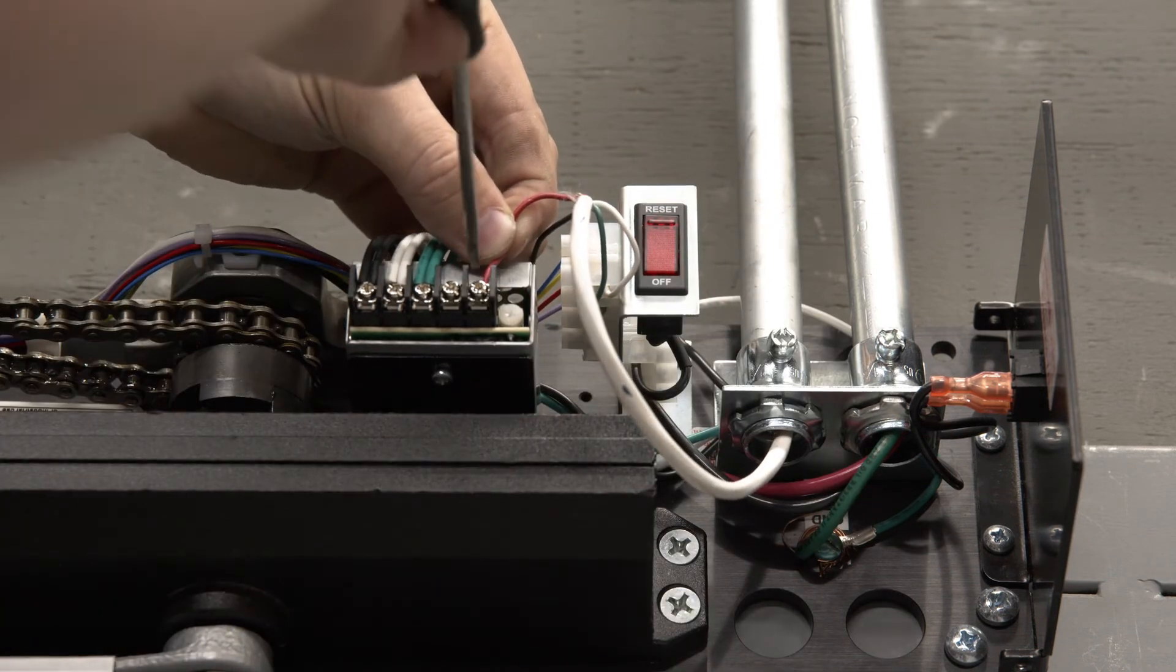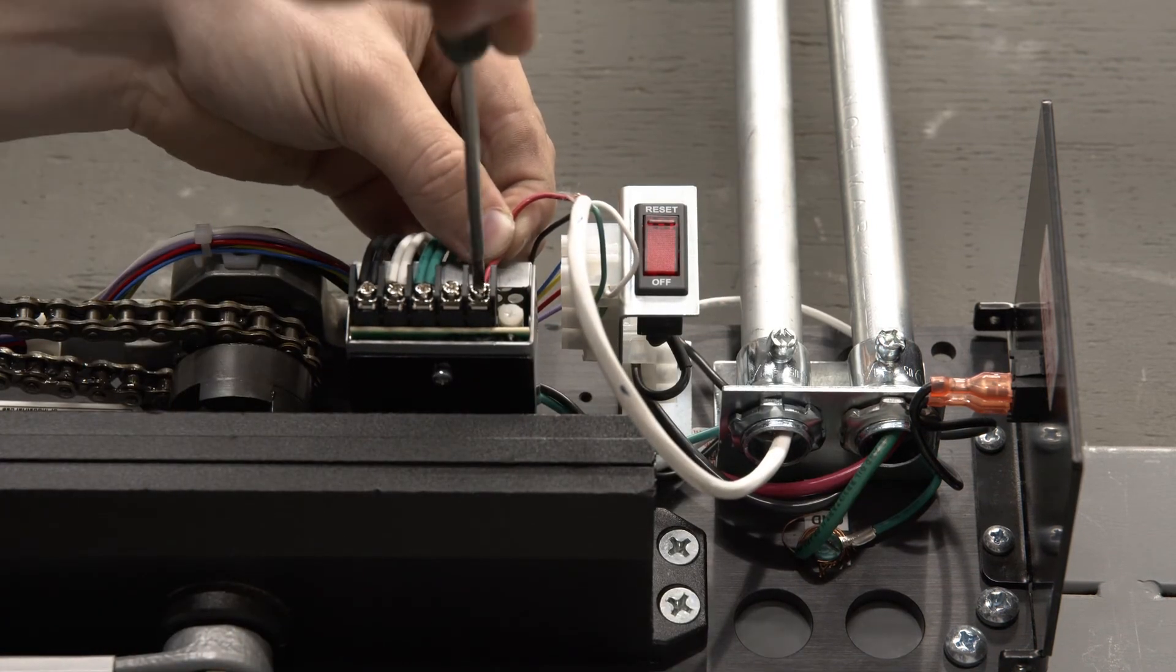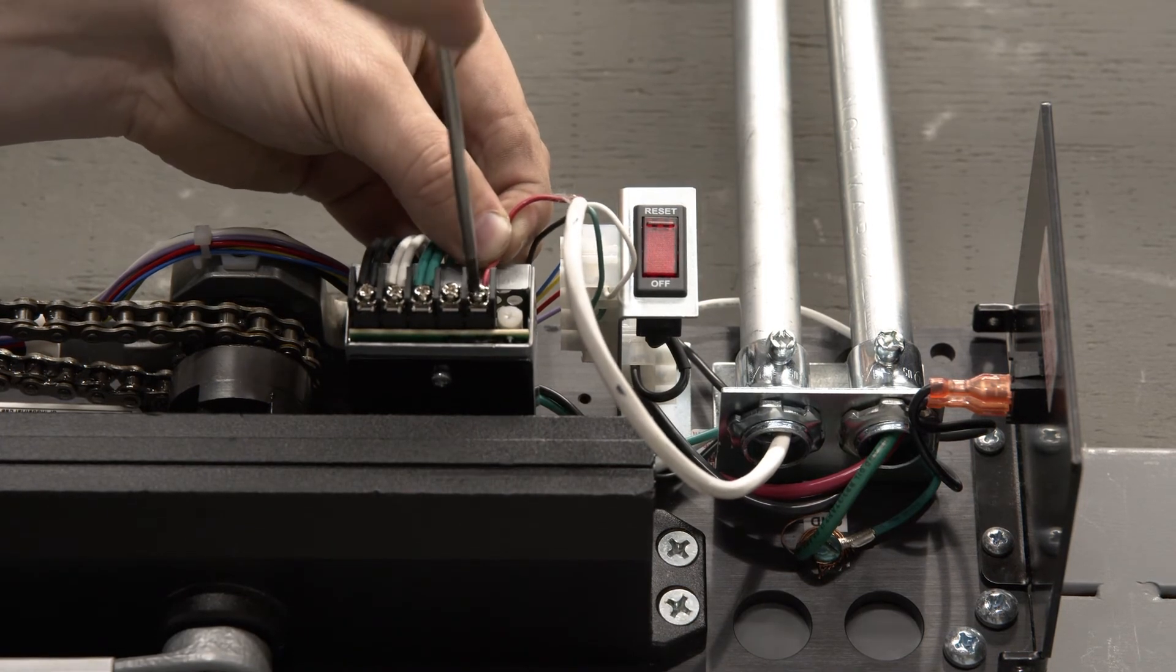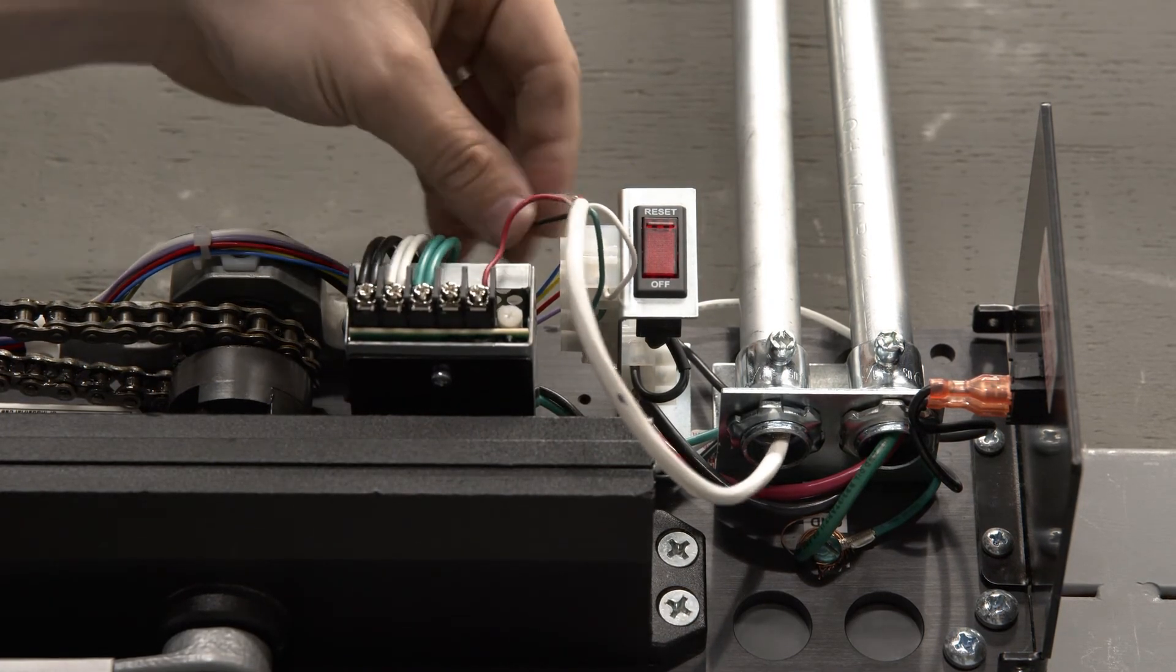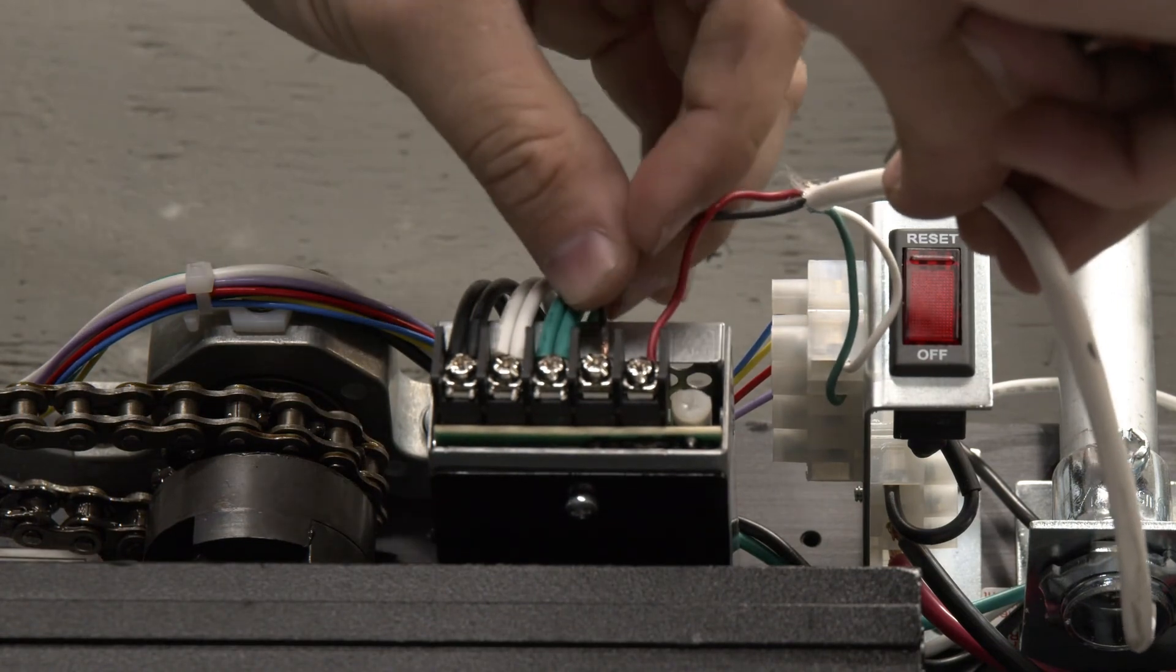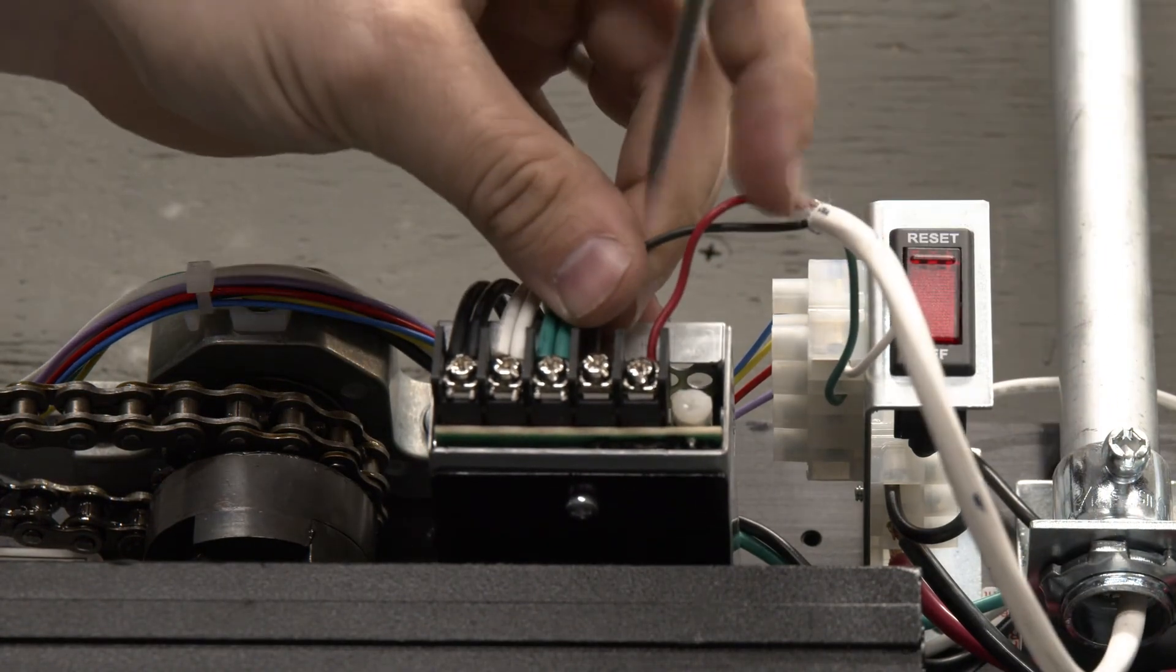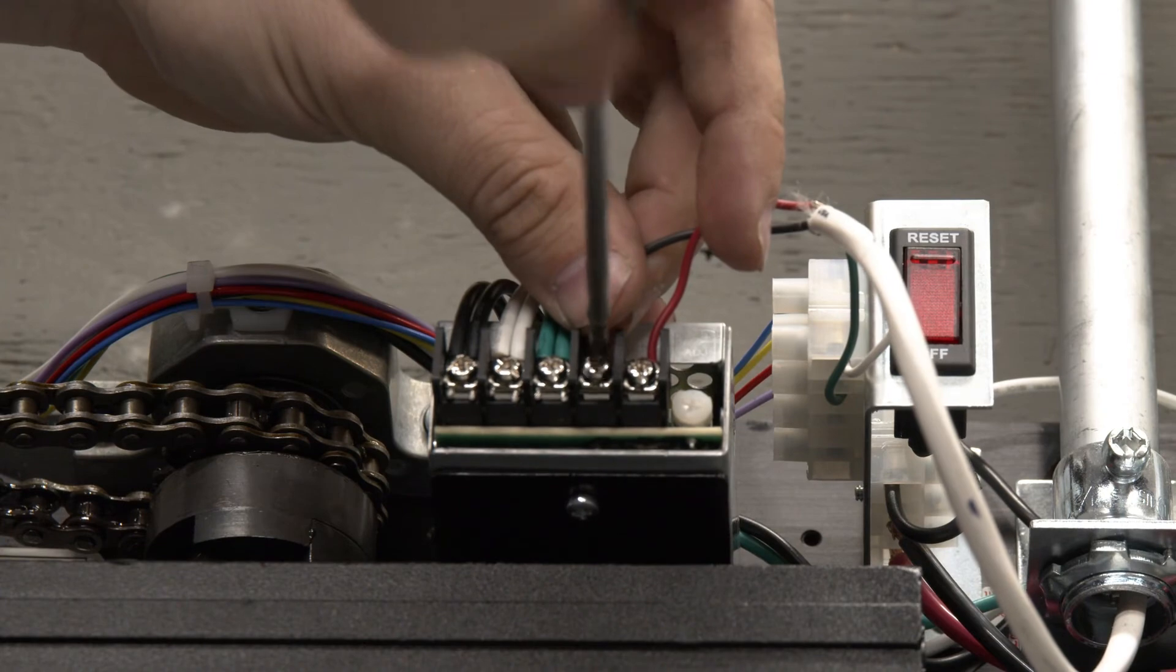Connect your power positive wire, in this example we're using the red wire, to the power supply plus V terminal. Connect your power negative wire, in this example using the black wire, to the power supply negative V terminal.